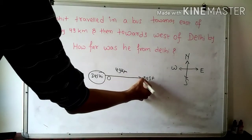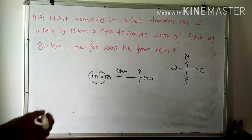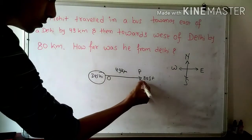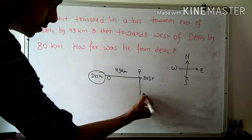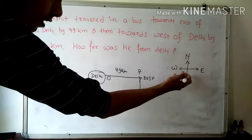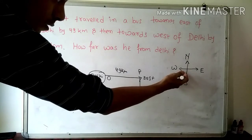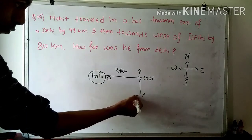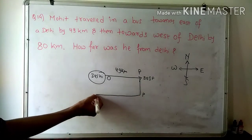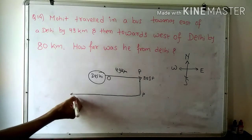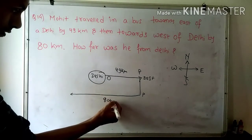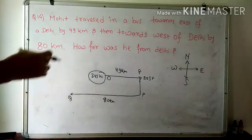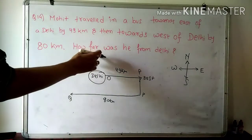Then towards west of Delhi by 80 km. After reaching point P, Mohit returns in the west direction — 80 km from point P. West direction is just opposite to east direction, so Rohit now moves backward and covers 80 km. Suppose this point is Q. Now the question asks: how far was he from Delhi?